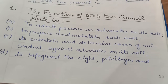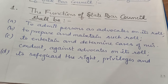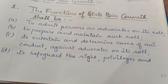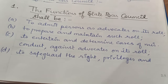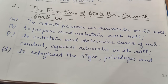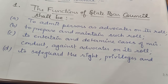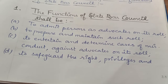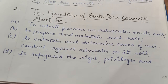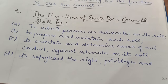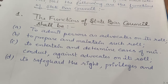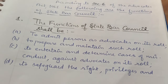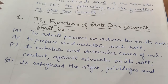Second hai: to prepare and maintain such roll — matlab jo jo advocates ne apna naam admit karwa liya hai, unke names ka roll ko maintain karna, prepare karna, yeh State Bar Council ka kaam hai. To entertain and determine cases of misconduct against advocates on its roll.